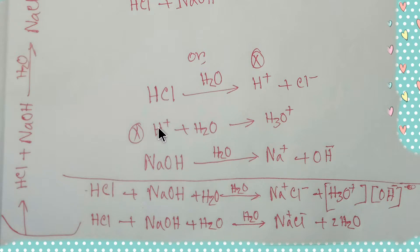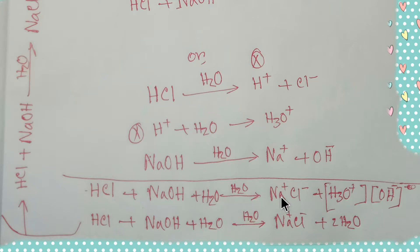When you add HCl and sodium hydroxide, the H₃O⁺ and OH⁻ combine to give water, and the sodium and chloride ions give sodium chloride. So from this reaction we are getting water and sodium chloride as products.